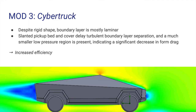Following the previous example, the unconventional Cybertruck bed shape results in no in-bed low pressure region, and the only low pressure region is a small area behind the car. Form drag is significantly decreased and outweighs any effects induced from the increased skin friction force.